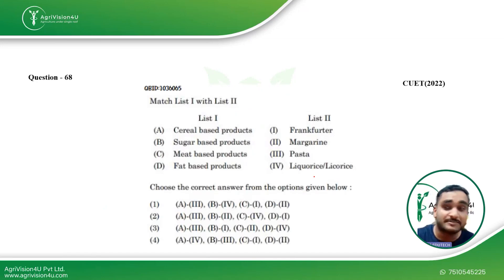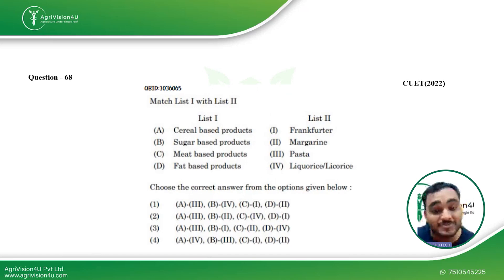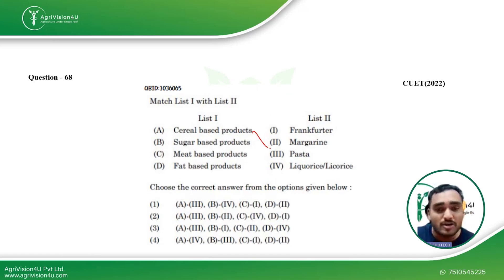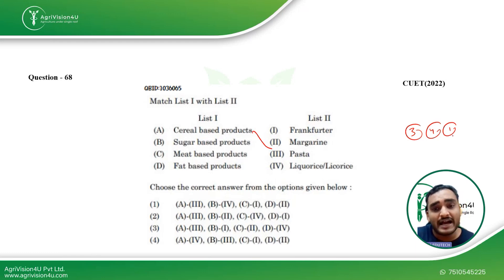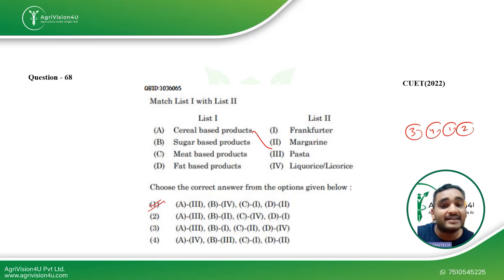Next we have a match-the-following question where we match cereal-based, sugar-based, meat-based, and fat-based products. Cereal-based product is pasta — option three. Sugar-based product is licorice — option four. Meat-based product is frankfurter — option one. Fat-based product is margarine, i.e., hydrogenated vegetable oil — option two. This gives the sequence 3, 4, 1, 2, making option one the correct answer.